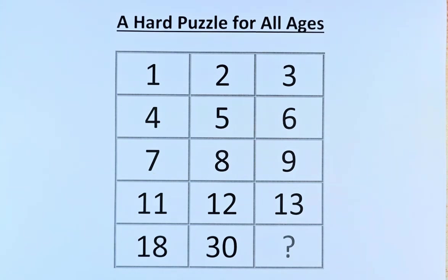In the first row, we have 1, 2, 3. Second row, 4, 5, 6. Third row, 7, 8, 9. In the fourth row, it is 11, 12, 13. And in the final row, we have 18, 30, and a question mark.